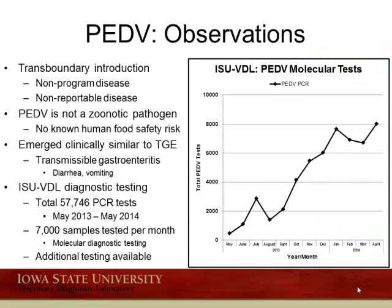At the time of the emergence of PED virus, it was considered a transboundary introduction, a non-programmed disease, and at that time a non-reportable disease. It is not a zoonotic pathogen and there is no known human food safety risk. When it emerged, it looked clinically similar to the TGE virus regarding the clinical signs and syndrome it induces.